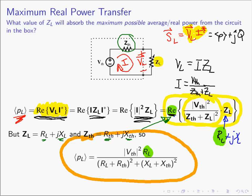To maximize the real power, we differentiate the quantity and set the result equal to zero. Our load impedance is composed of a resistance and a reactance, so changing Z sub L means we have two knobs: we can change R sub L and we can change X sub L. So I need to differentiate the real power with respect to R sub L, and also differentiate it with respect to X sub L, set them both equal to zero, and solve both constraints simultaneously.